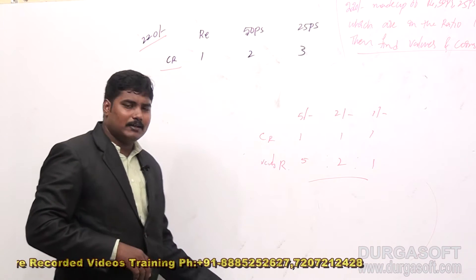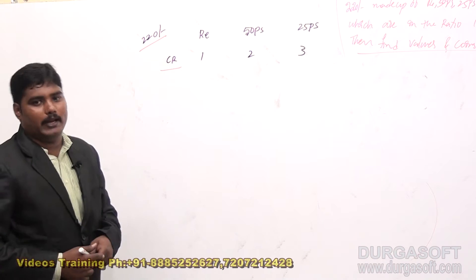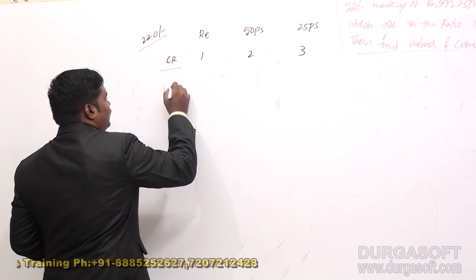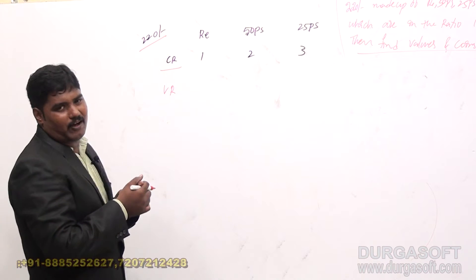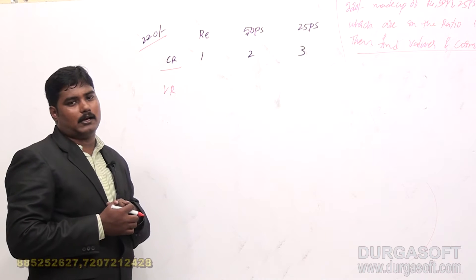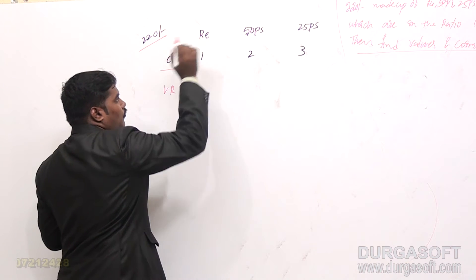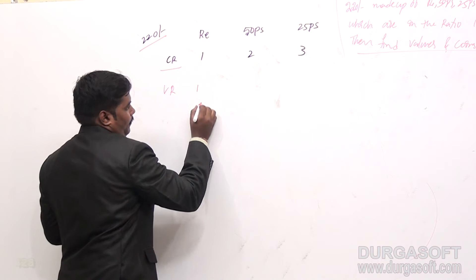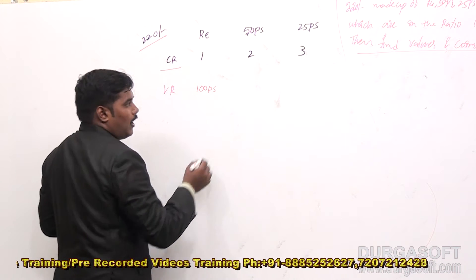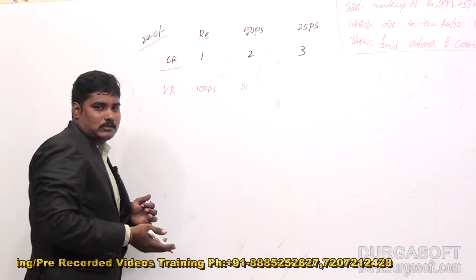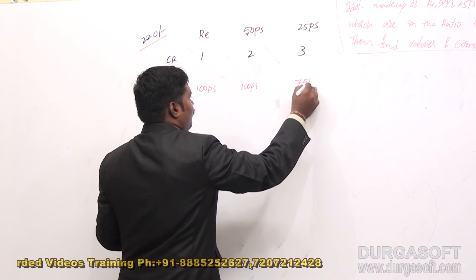That is why allotment quantity should be allotted as per their quantity ratio, and value must be distributed as per their value ratio only. Here the value ratio is: 1 coin of 1 rupee has value 100 paise. 2 coins of 50 paise have value 100 paise. 3 coins of 25 paise have value 75 paise.